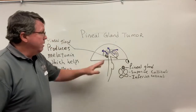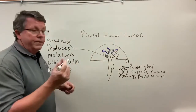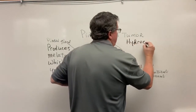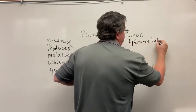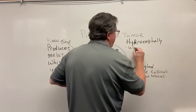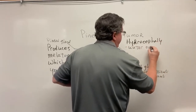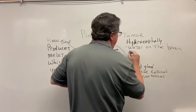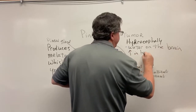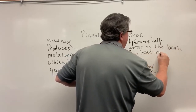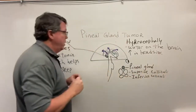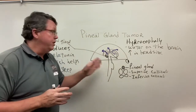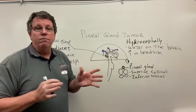One of the symptoms of this can be hydrocephaly — basically known as water on the brain. In kids, it can cause an increase in head size. Now in adults, or in kids also, what can happen is we're going to start to press on other structures in the brain, and when you do that, you're going to start having other different problems go on.